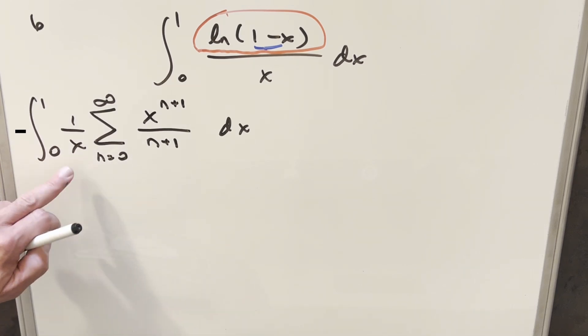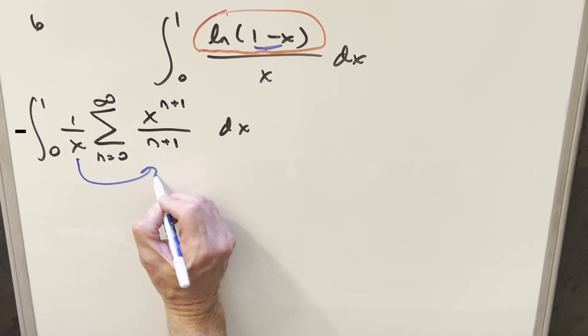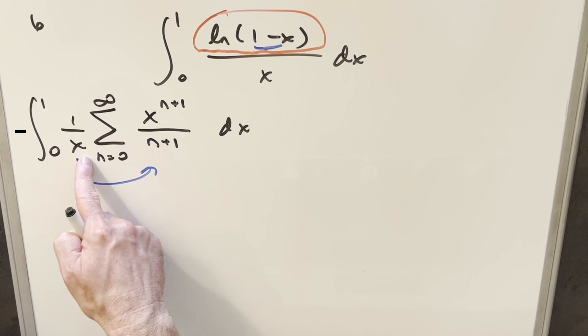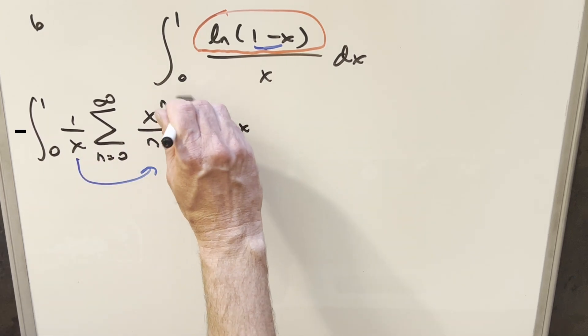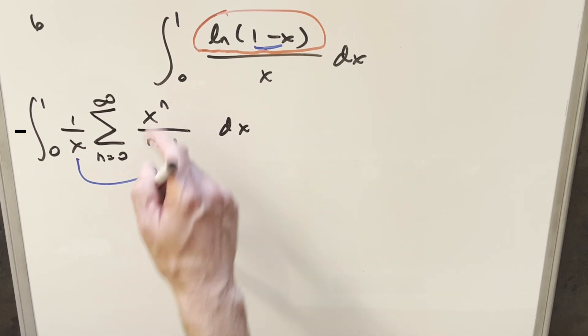Now inside the sum, x, there's no dependency on n. So what I can do is just multiply this in here, which is essentially dividing and I combine it with this here. So if we multiply in one over x times x to the n plus one, exponent properties, I can just remove this plus one. Now we have x to the n here.